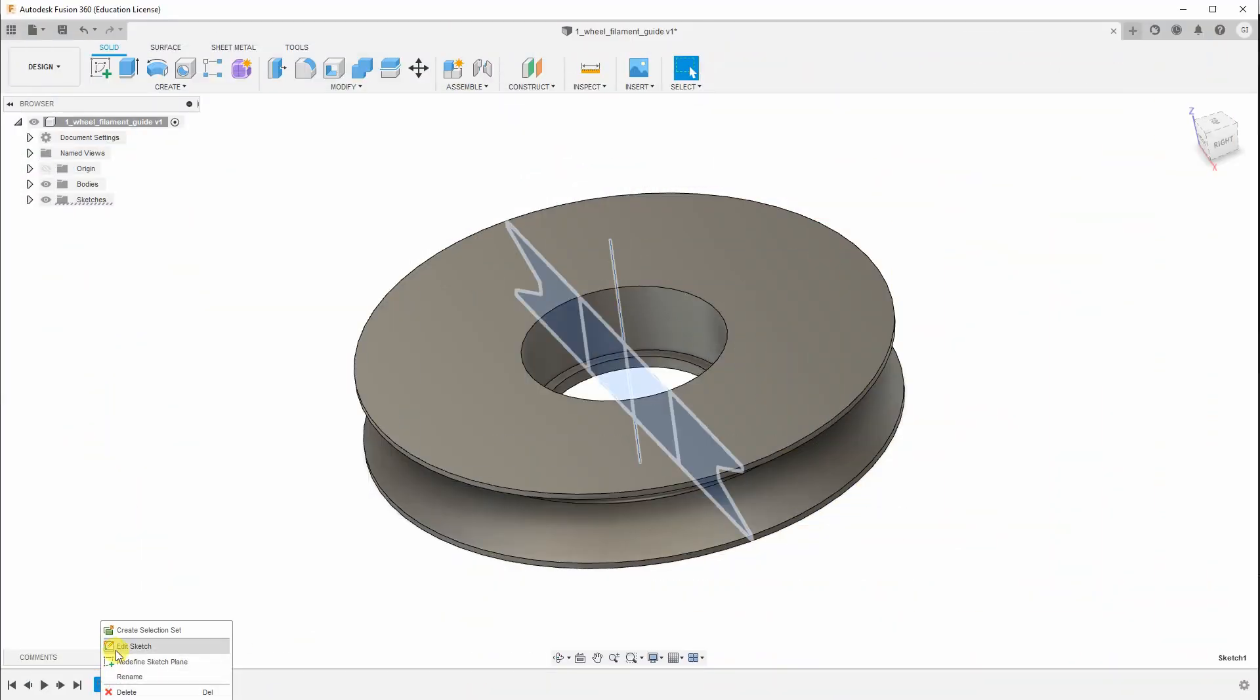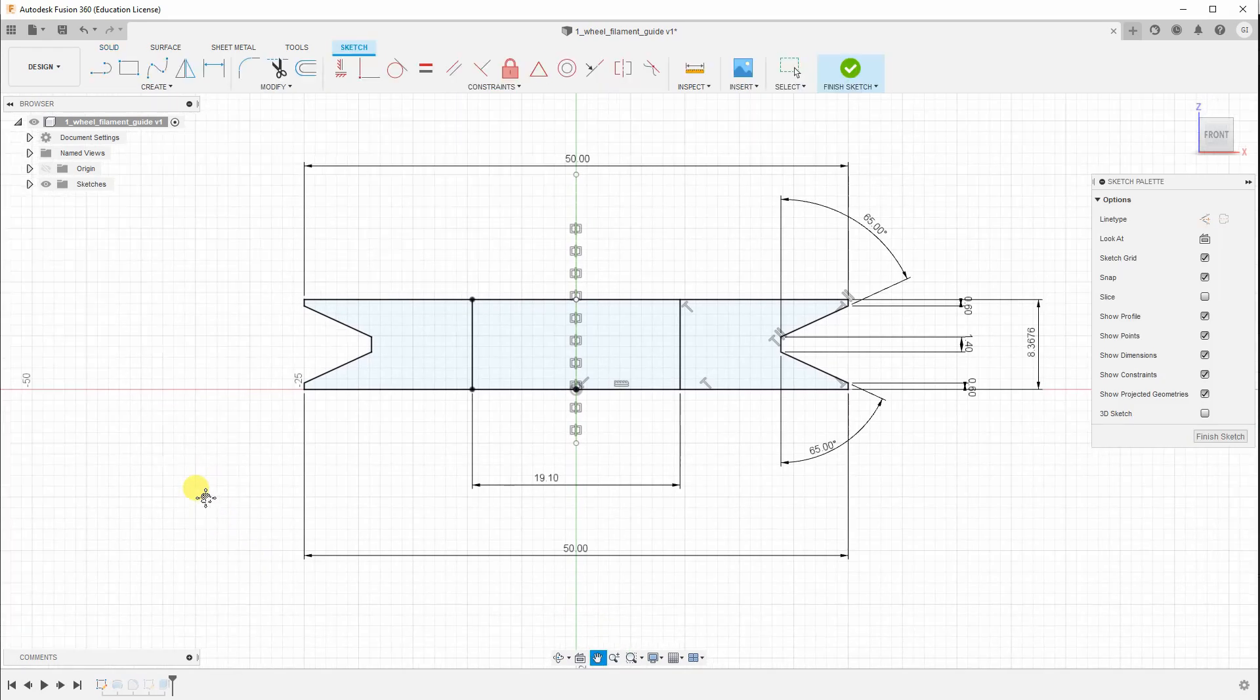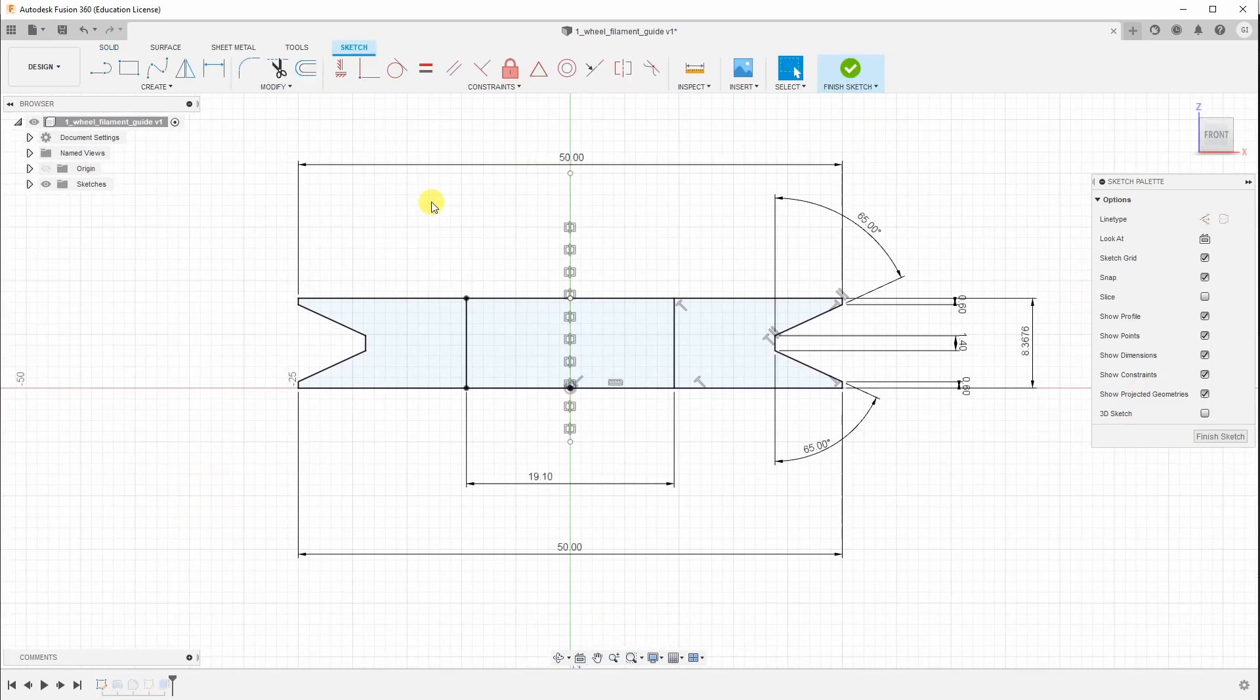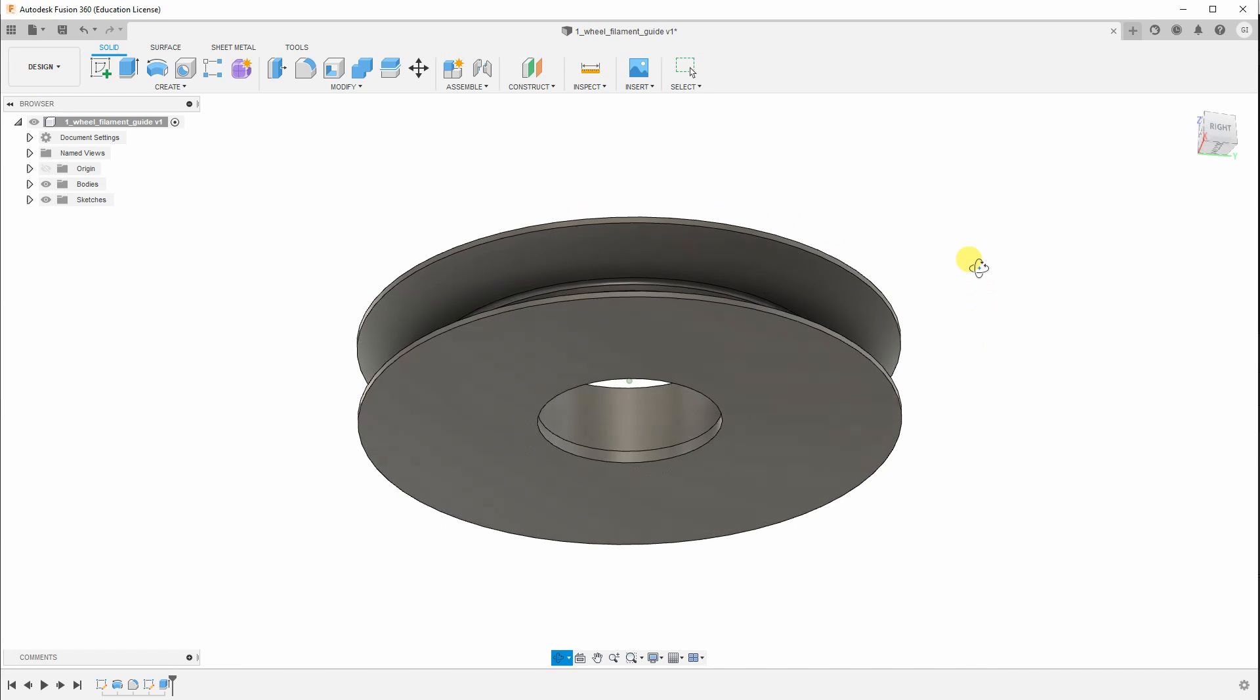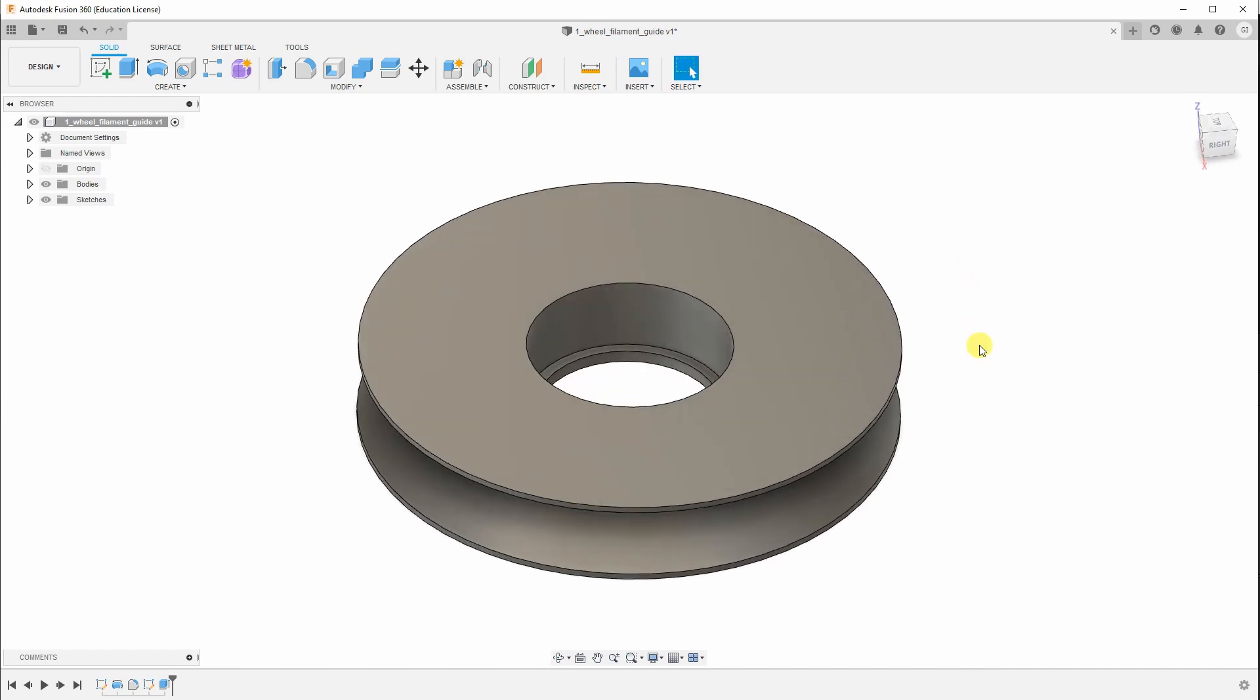And this is the pulley in Fusion 360 and here you can see the dimensions I used here. Well maybe two dimensions I mention here. The one is this 19.1 where the ball bearing will be inserted and the other is the 65 degrees. Well it will be a very risky printing, but for PLA this overhang should be fine. And this is how it looks like in three dimensions.